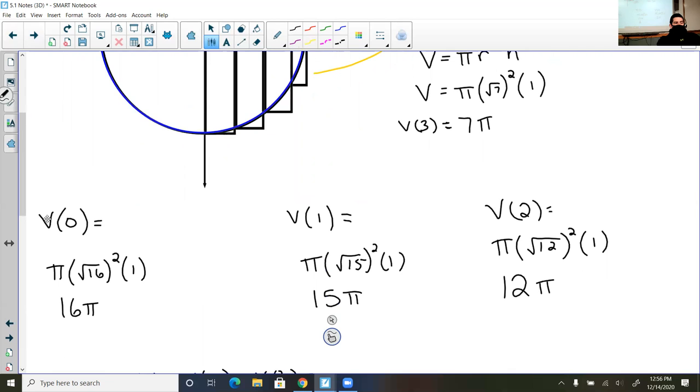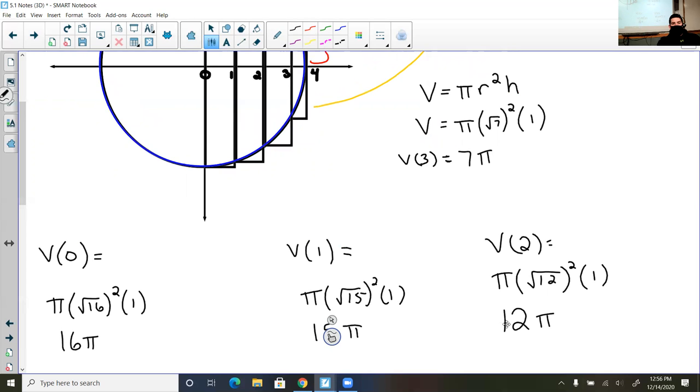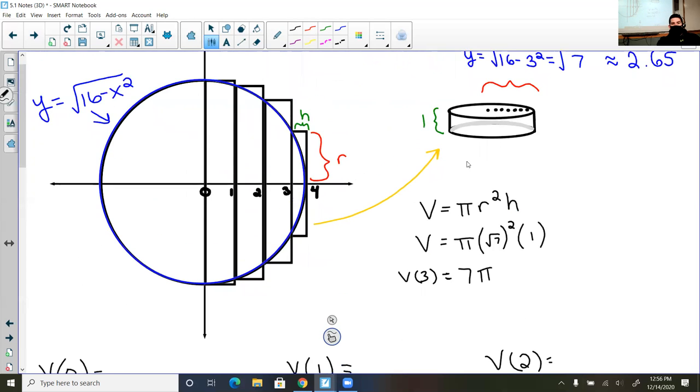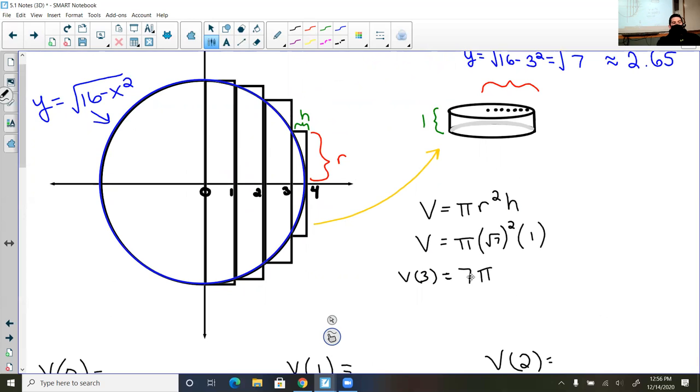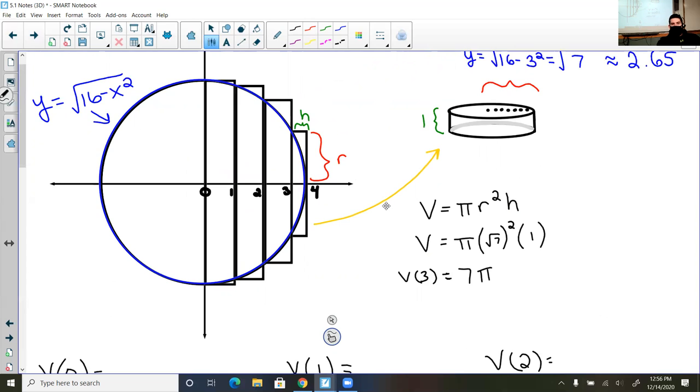Here we are. So the volume when I plug in 0 would be 16 pi, then 15 pi for 1, and 12 pi for 2. You'll know if you're doing this wrong, because if you do not have descending values, then you probably plugged in something wrong. Also, if this 7 pi is larger than any of your three volumes, you also did something wrong, because the volume should be decreasing as you get smaller cylinders.